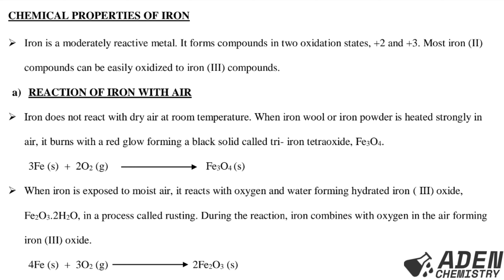Number one: the reaction of iron with air. Iron does not react with dry air. When iron powder is heated strongly in air, it burns with a red-blue flame forming a black solid called tri-iron tetraoxide, Fe3O4. The equation is: 3Fe(s) + 2O2(g) → Fe3O4(s).